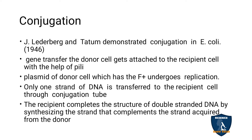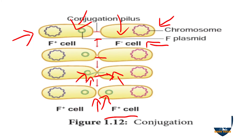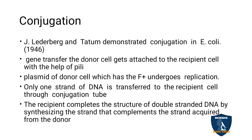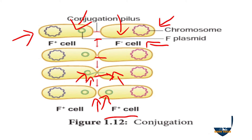Only one strand of DNA is transferred to the recipient cell through the conjugation tube. The recipient completes the double-stranded DNA structure by synthesizing the complementary strand to the one acquired from the donor. After the double strand is formed, the sex pili is destroyed, the bacterial cells are separated, and both bacteria are now F plus — meaning the fertility factor is present in both.